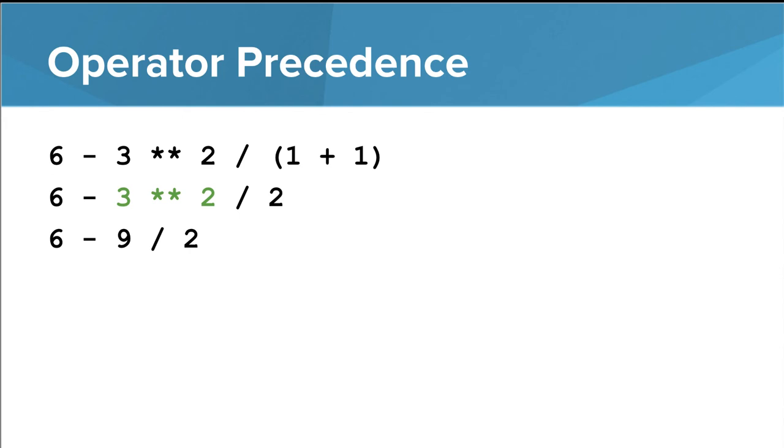The next thing Python evaluates is the exponentiation expression, because exponentiation has higher priority than subtraction and division. Then we evaluate the division expression, and remember this is integer division, so the result is just four. And then we're just left with a single subtraction expression, and the result is two.